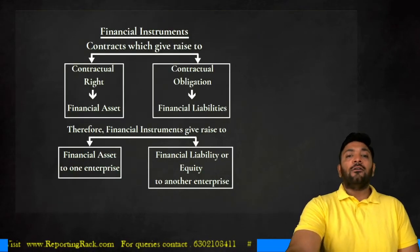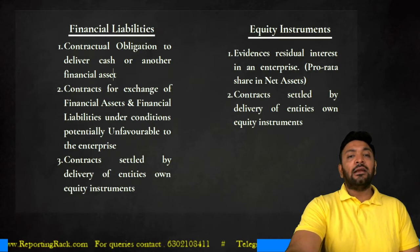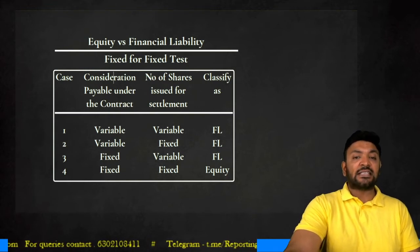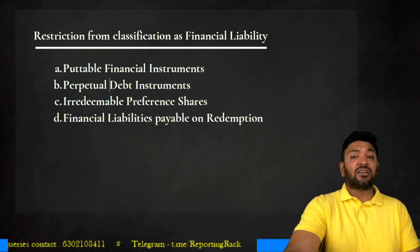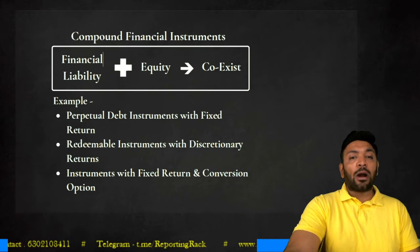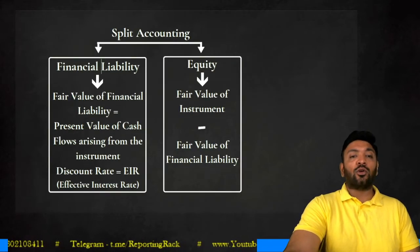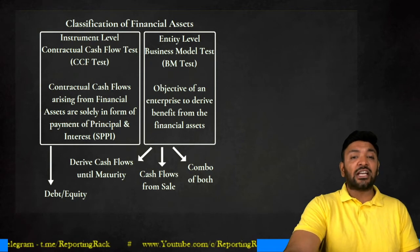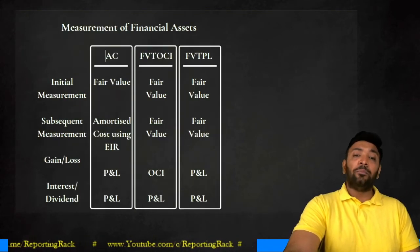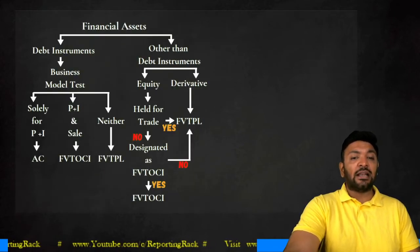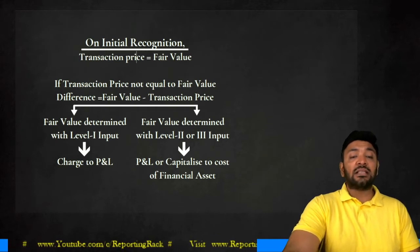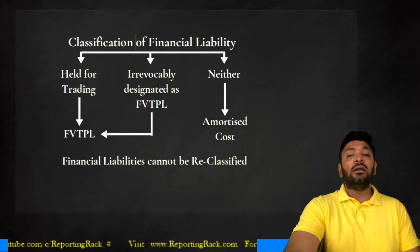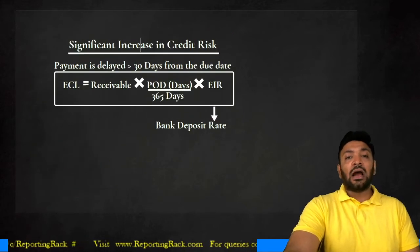To summarize, we have covered: financial instruments definition, financial asset definition, financial liabilities and equity definition, the difference between equity and financial liability explained through the fixed-for-fixed test, restrictions on classification as financial liability, compound financial instruments with split accounting, reclassification, classification using instrument-level and entity-level testing, measurement, initial recognition where transaction price may differ from fair value, reclassification of financial liabilities, and impairment.